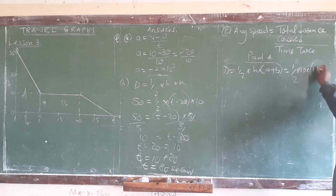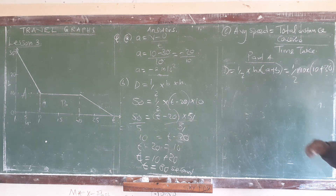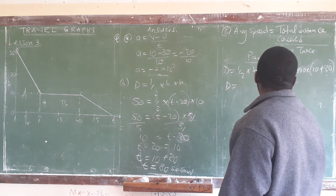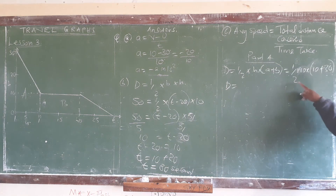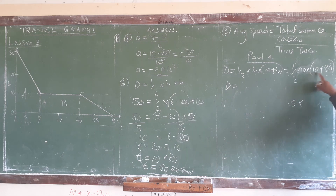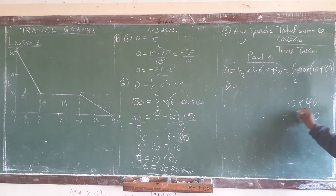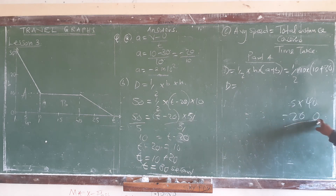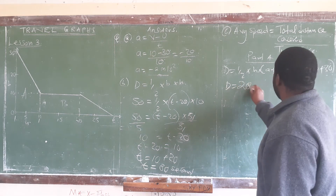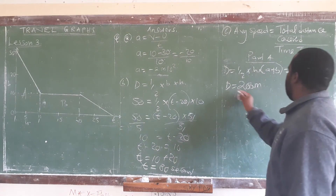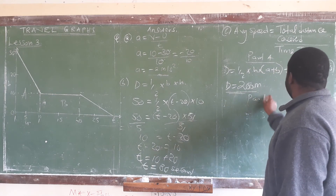We have 10 plus 30 which is 40. Half of 10 is 5, times 40 gives us 200. So for the first segment the distance the particle covers is 200 meters. The SI unit of distance is meters, so our answer is 200 meters.